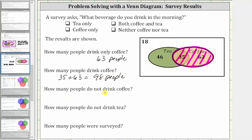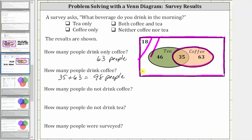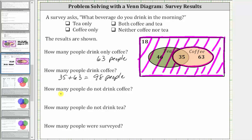The next question is how many people do not drink coffee? If this is the set of coffee drinkers, then the set of people that don't drink coffee would be the set outside this set. The number of people that do not drink coffee is equal to 18 plus 46, which is equal to 64 people.